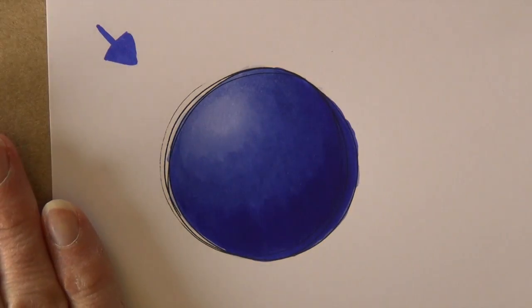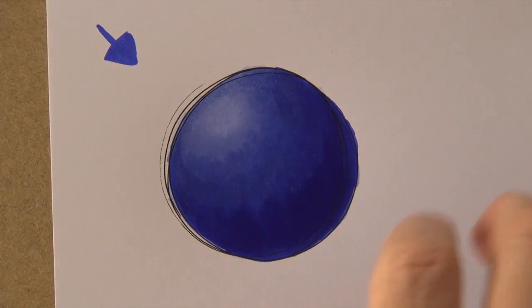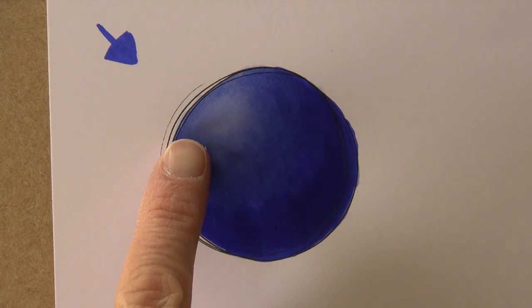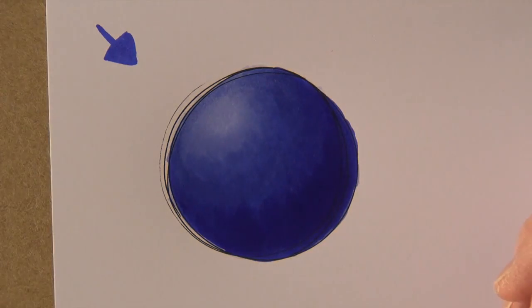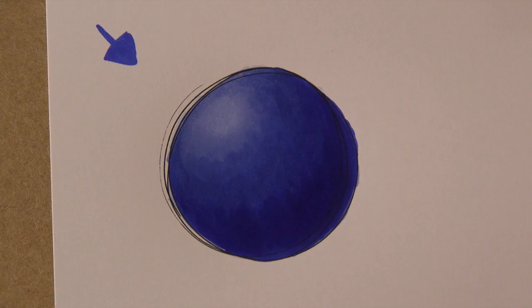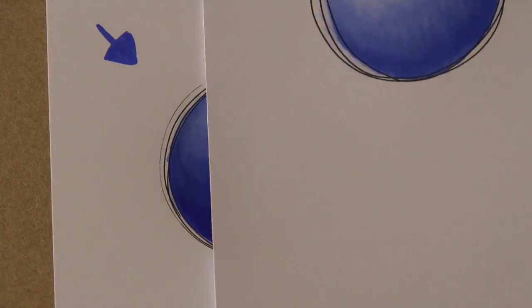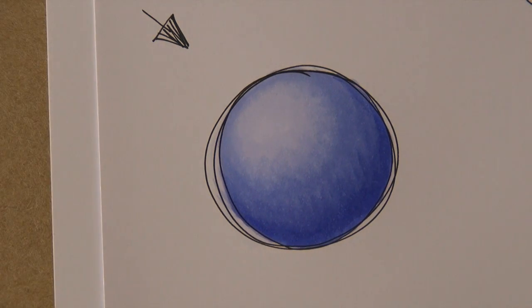So hopefully what you're seeing is a rounded ball. I did go very dark with this image. I did not leave a white highlight. But hopefully you can see that rounded shape. Here is one that I did considerably lighter. Exact same concept.